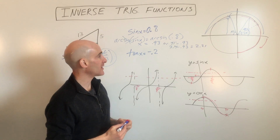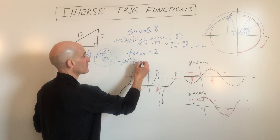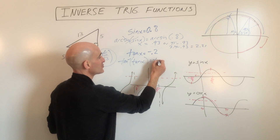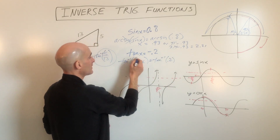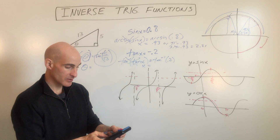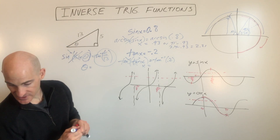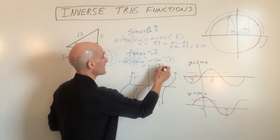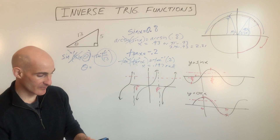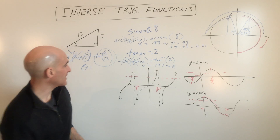Let's do another example: tangent of x equals negative 0.2. So let's take the tangent inverse of both sides. These are inverses, so x equals the tangent inverse of negative 0.2. Doing that on the calculator, we get approximately negative 0.197 radians.